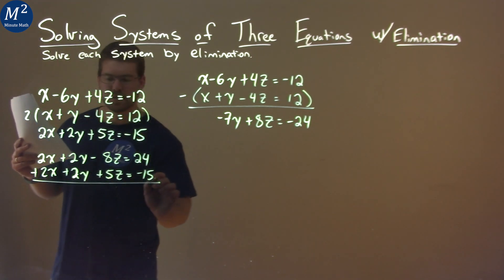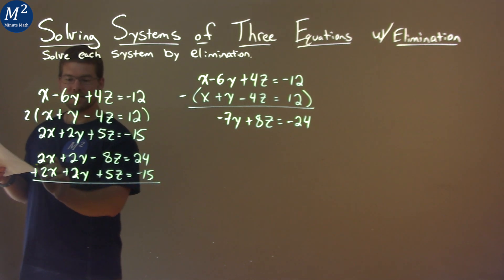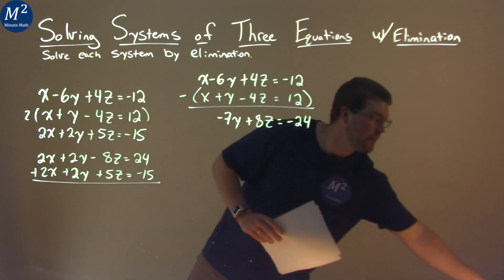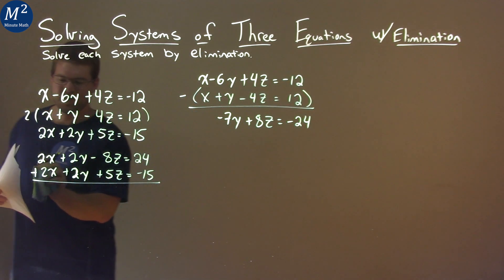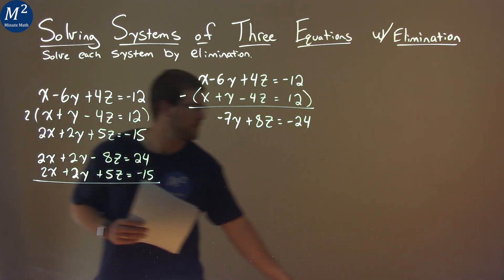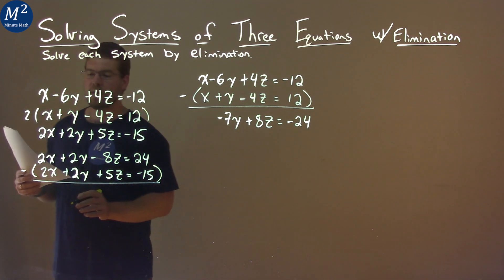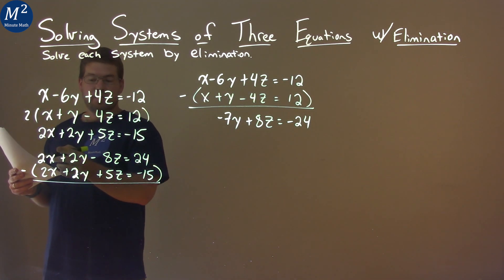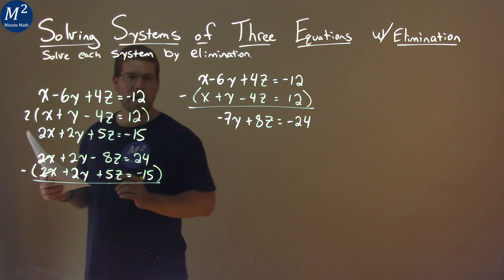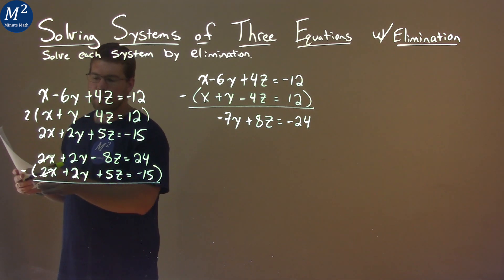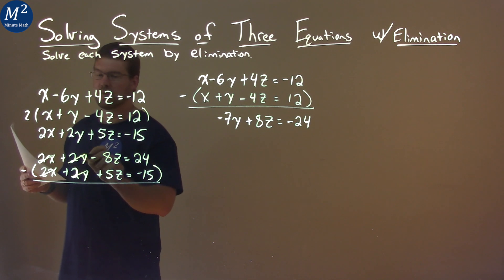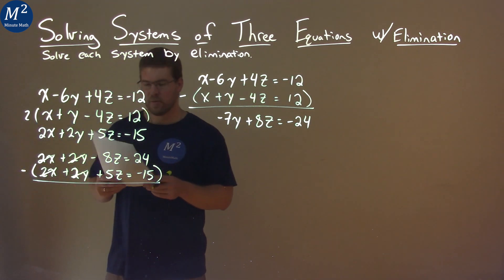By adding the two equations together—or sorry, subtracting. Don't add, we've got to subtract. Adding won't do anything. We've got to subtract them here. So by subtracting these two equations, our x's are going to cancel. 2x minus 2x is 0x. But also look what happens with the y: 2y minus 2y also cancels. So this is like a double impact great thing.